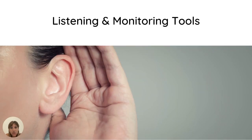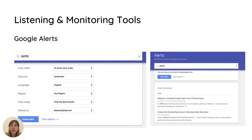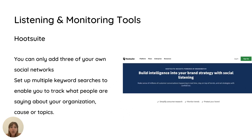That brings us to the last section: listening and monitoring tools. This is a small sample because there are always new tools becoming available, so use this list as a guideline and make your own research depending on your needs. Google Alerts is always a good tool to monitor what people are saying about your organization — you can set it up in a few seconds and decide the frequency of alerts you want to receive. You might also use Hootsuite to schedule your posts, but you can also use it to monitor certain keywords and track the sentiment around your cause or topics.